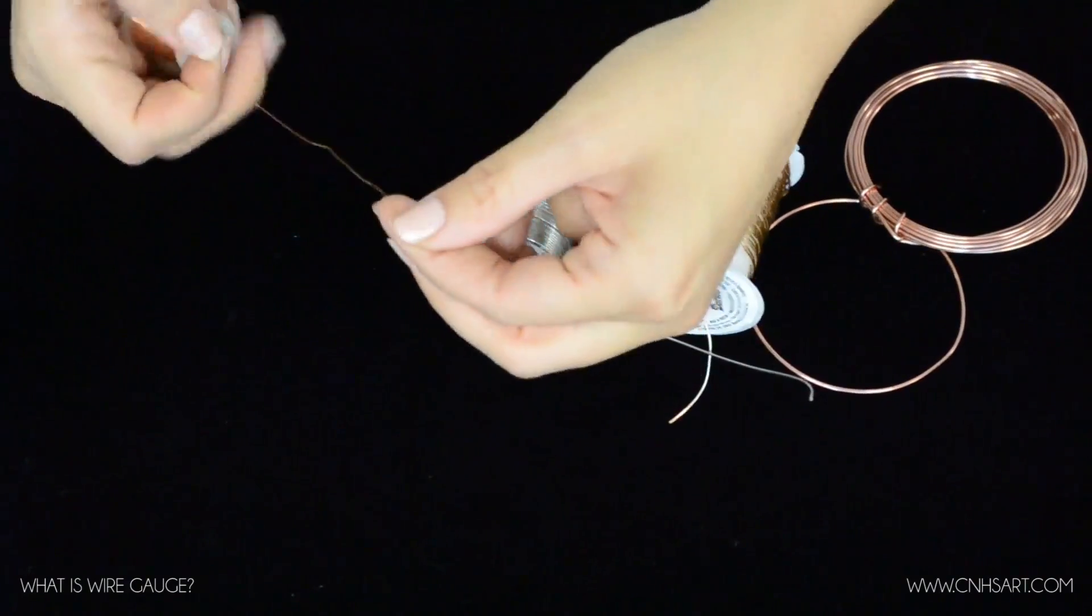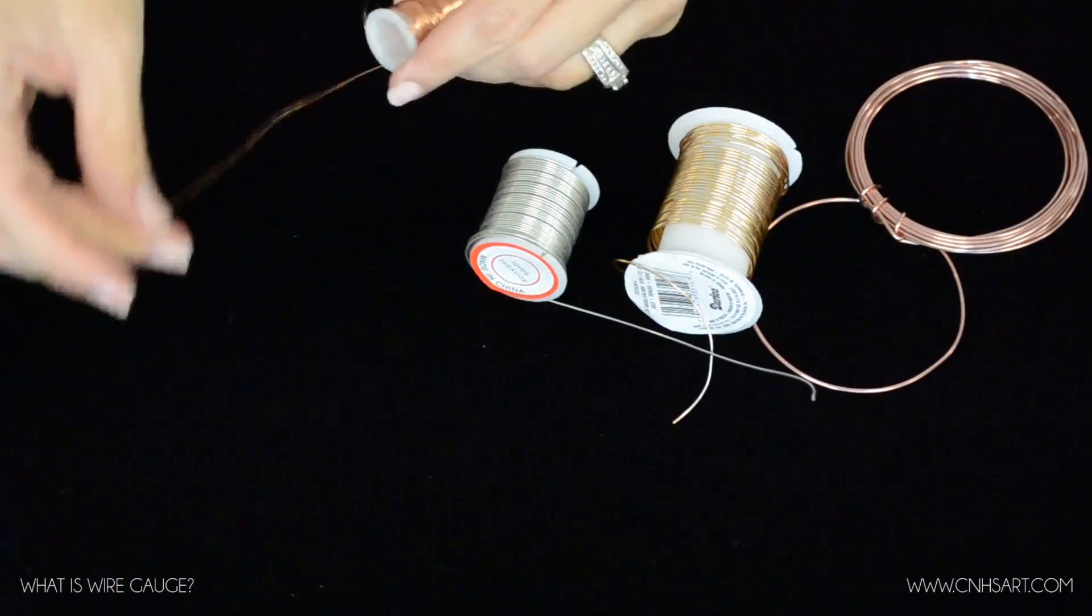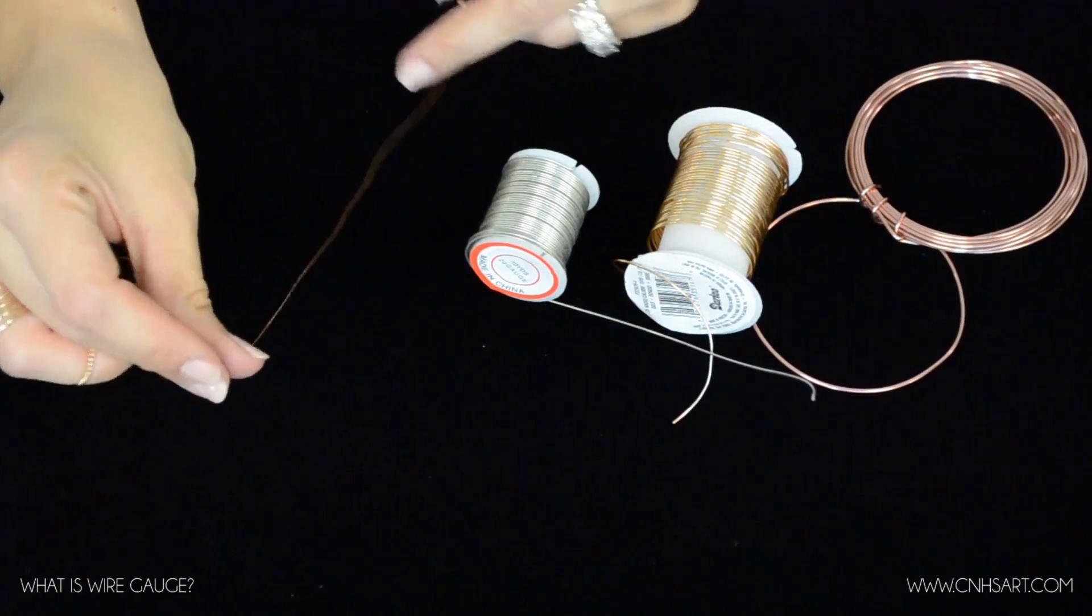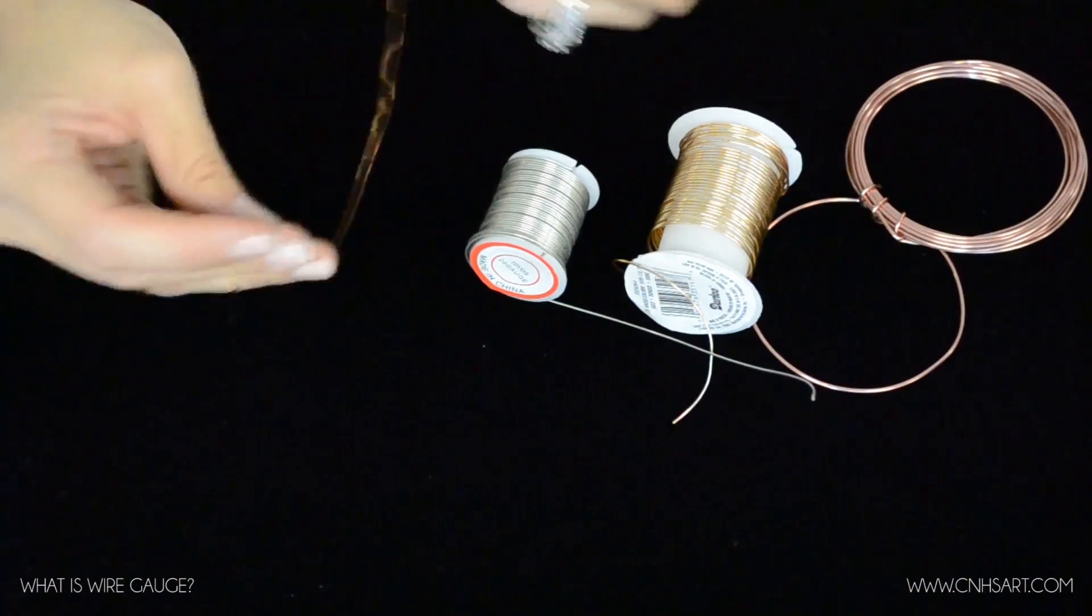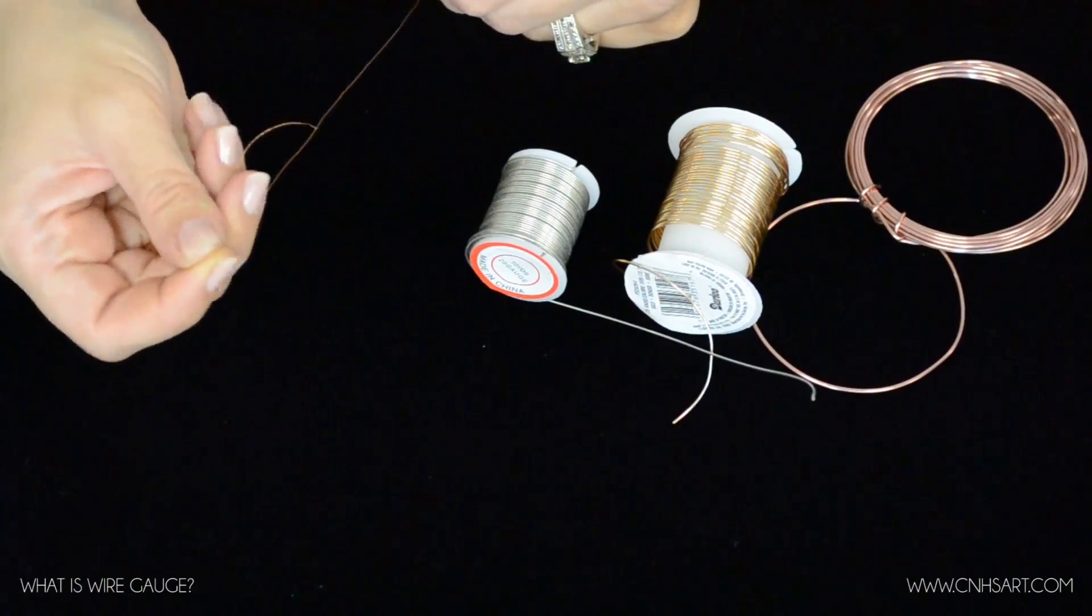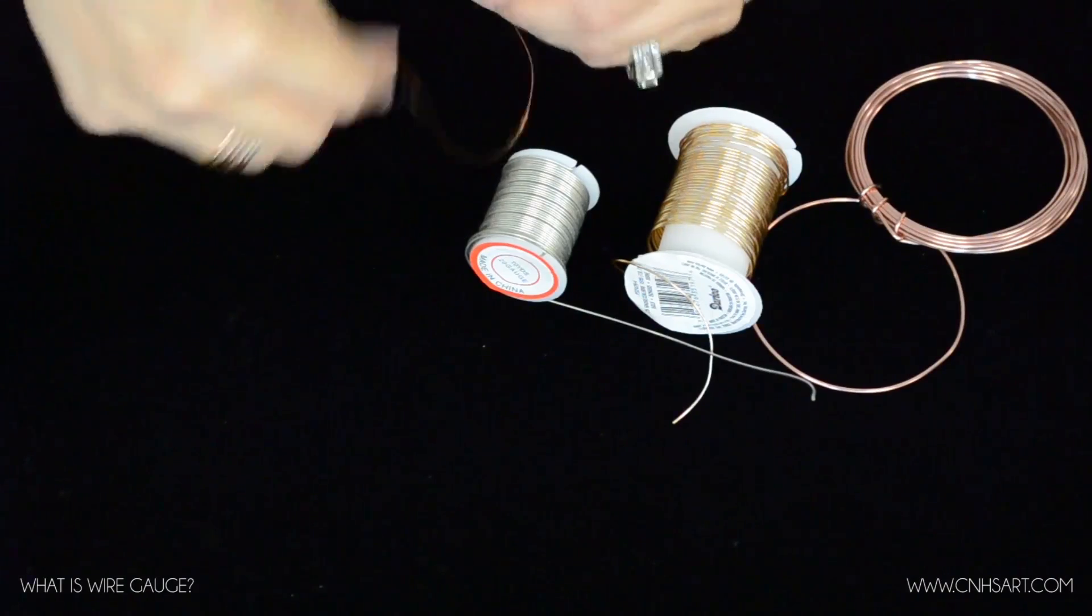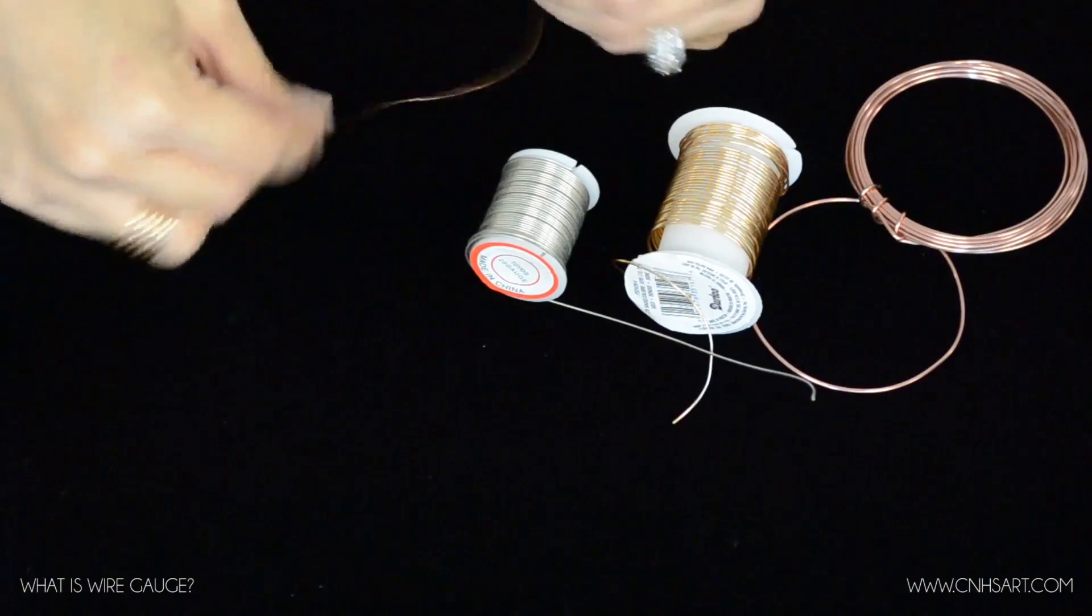We actually use this when we do our crocheted bracelets in class because it's really easy to use. It holds its shape when you bend it, however, it's easy to use like a thread or cord would be. So that's the 30 gauge, 20 gauge, and 16 gauge.